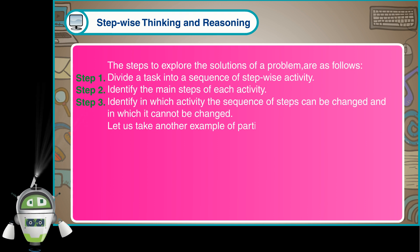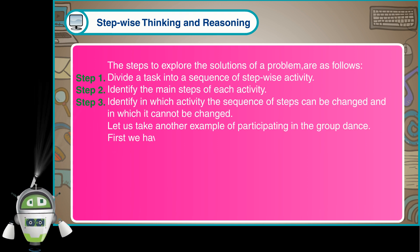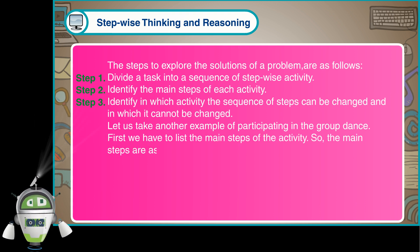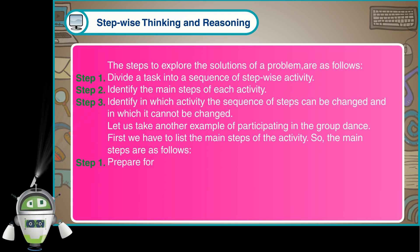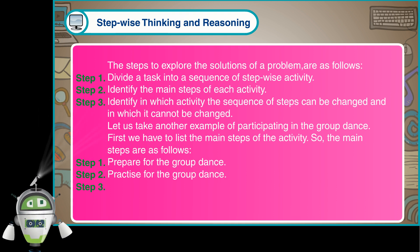Let us take another example of participating in the group dance. First, we have to list the main steps of the activity. So the main steps are as follows: Step 1 - Prepare for the group dance. Step 2 - Practice for the group dance. Step 3 - Perform the group dance.